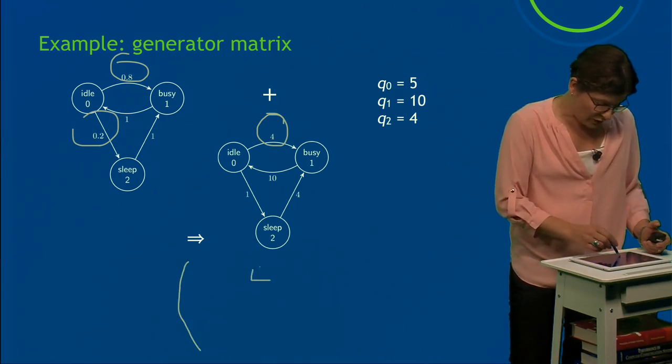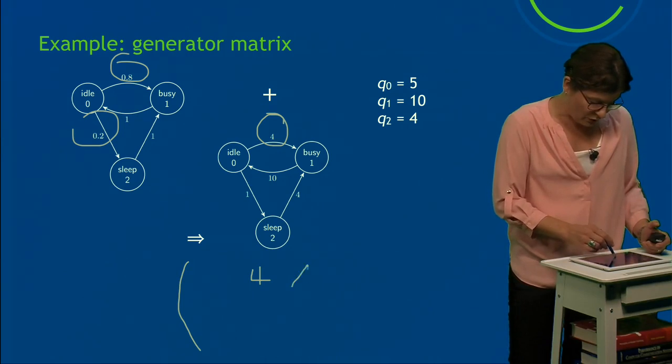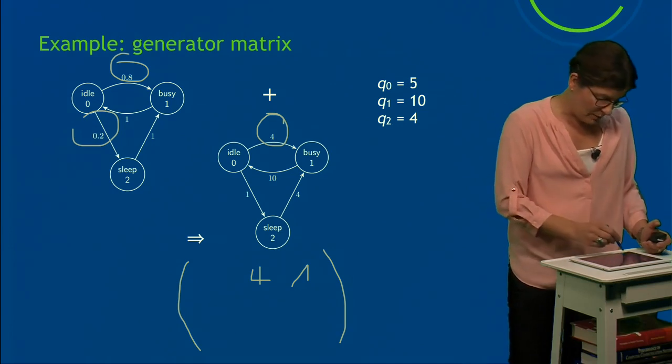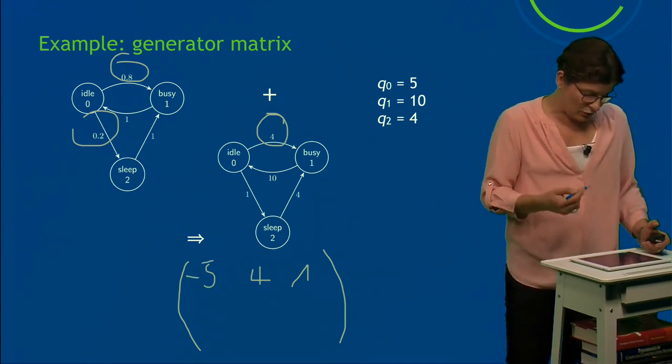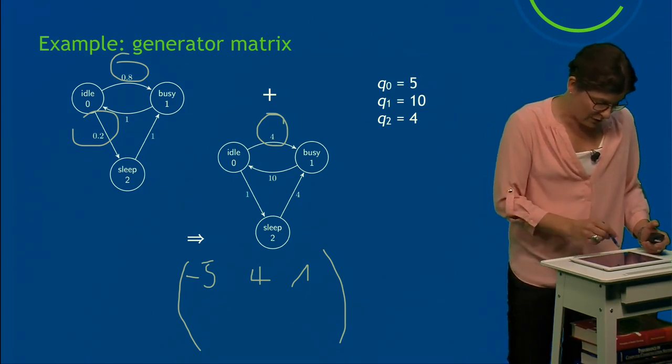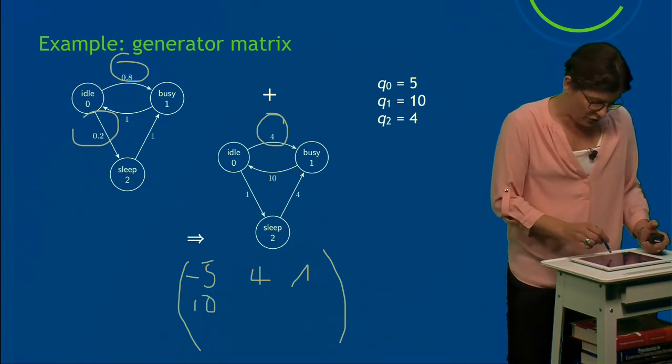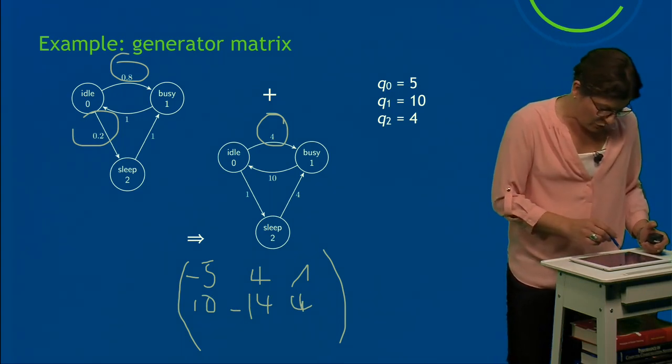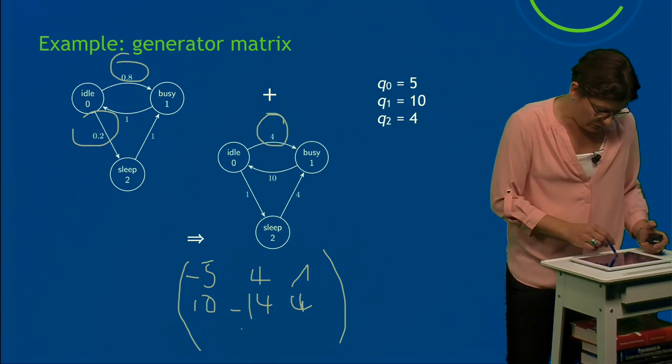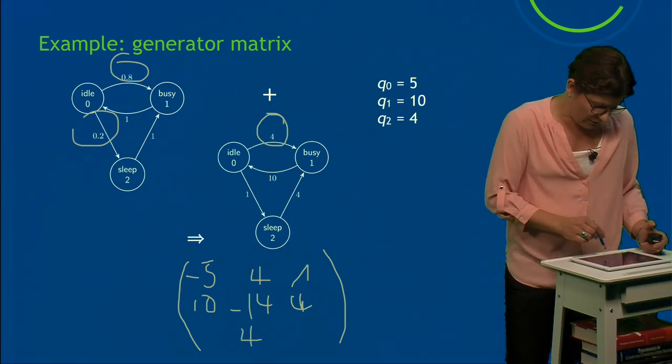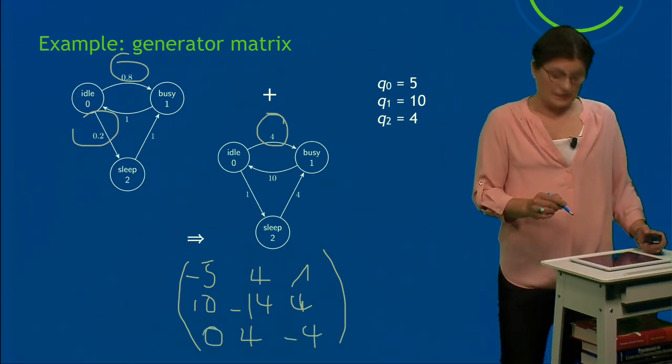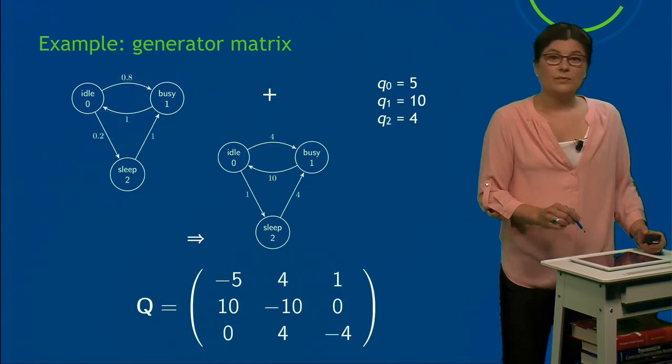Now for this CTMC, I can again write down the generator matrix. So I move to state 1 with rate 4. I move to state 2 with rate 1. And now the diagonal entry is the negative row sum, so -5. Next row means next state: from 1 to 0 with 10, and from 1 to 2 with 4. And the negative row sum here is -14. Last state: 2 to 1 is 4, and that is the only transition. So this is 0, and this is -4. Let me clean this up for you.